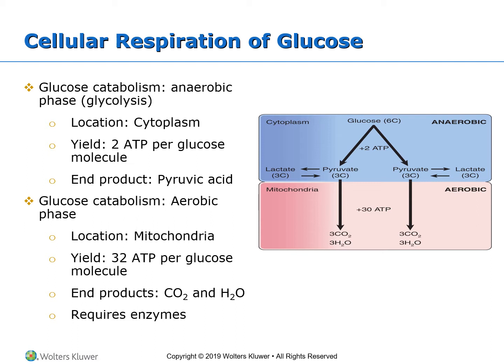The pyruvate can transform itself in a reversible reaction into another acid called lactate, also having three carbons. Lactate is a very useful energy intermediate product. Starting with six carbon atoms, we end up with six altogether in two components — so nothing is lost. Pyruvate cannot be metabolized further without oxygen; it will stay as pyruvate if oxygen is absent.